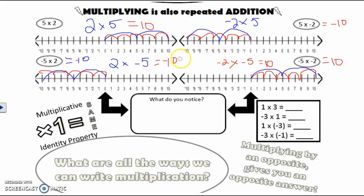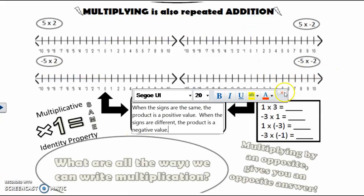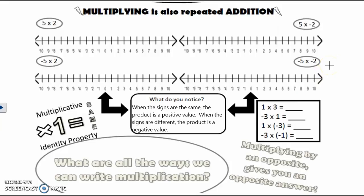Take a second and tell me what you notice. What I'm really asking you to look at is: when do you end up with a positive, and when do you end up with a negative? What I notice is that when we had the same signs, our product was positive. When we had different signs, our product was negative. The first and last problems were positive tens; the second and third were negative tens, because negative five and two had different signs, and five and negative two had different signs.